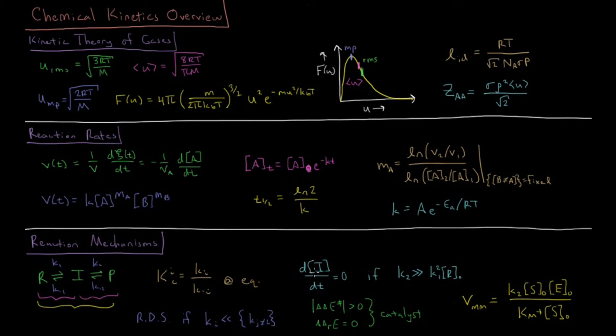We can also develop the steady state approximation which says that the change in the concentration of an intermediate over time equals zero. And this is valid if we have our second step here being much, much faster than our first. And we can use this to derive expressions for various complicated mechanisms which involve intermediates or several intermediates.